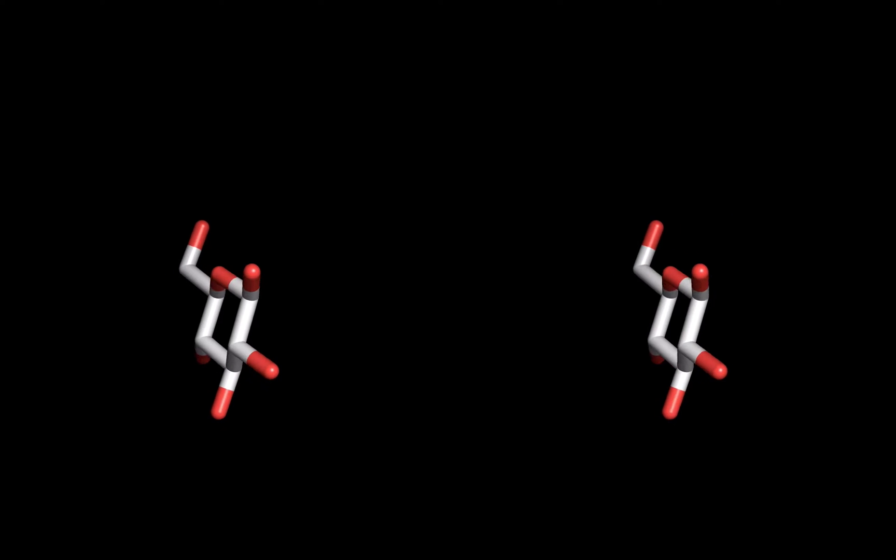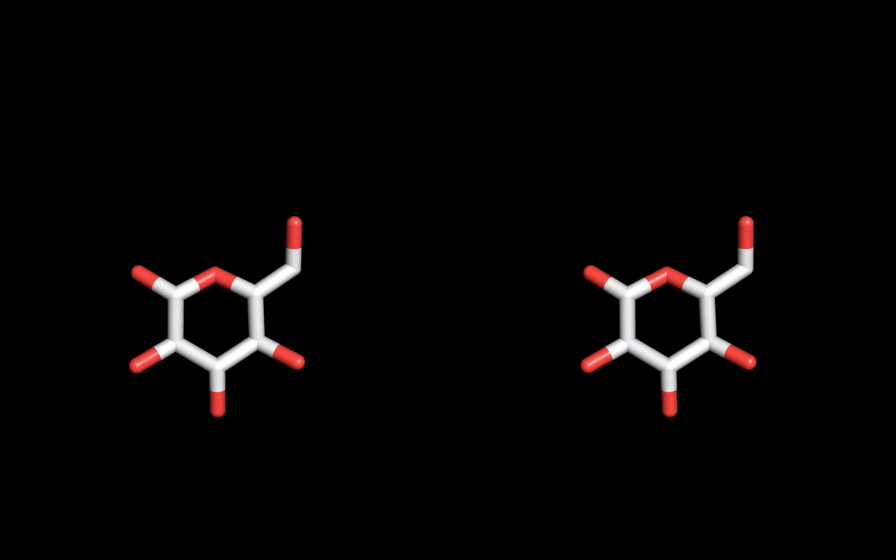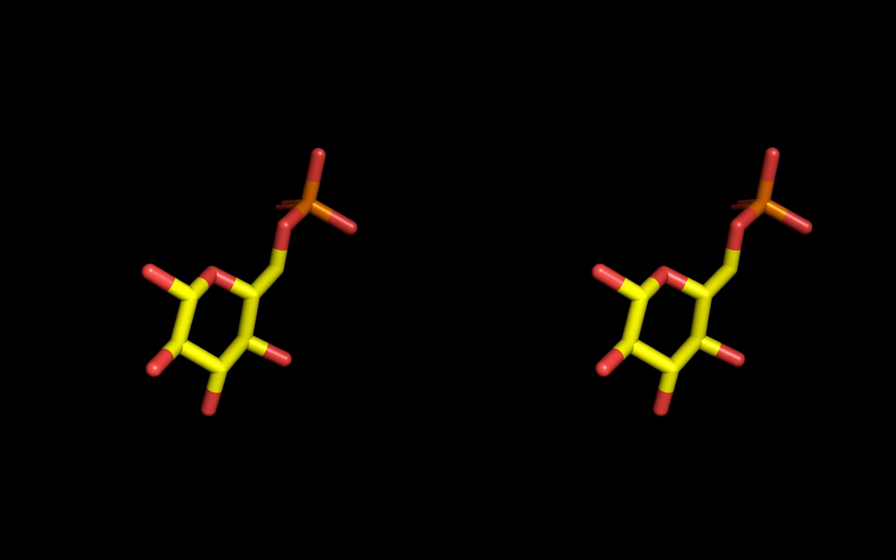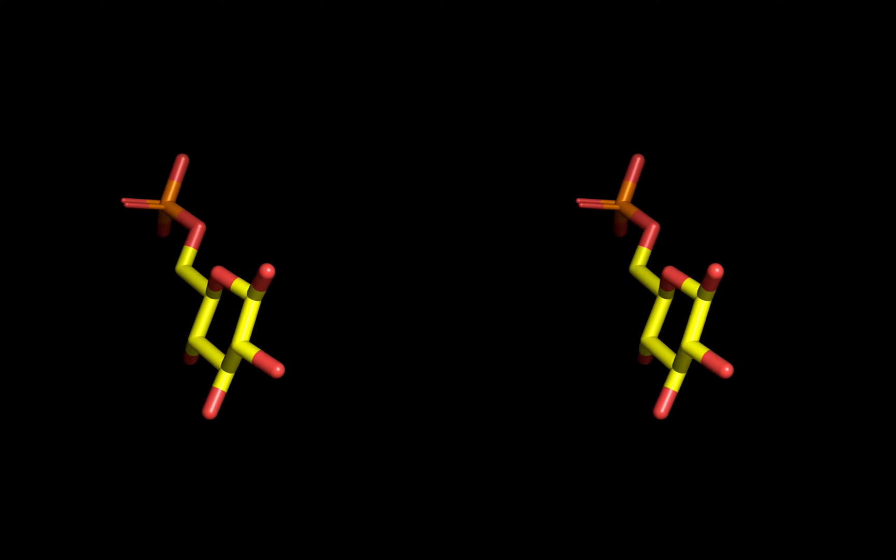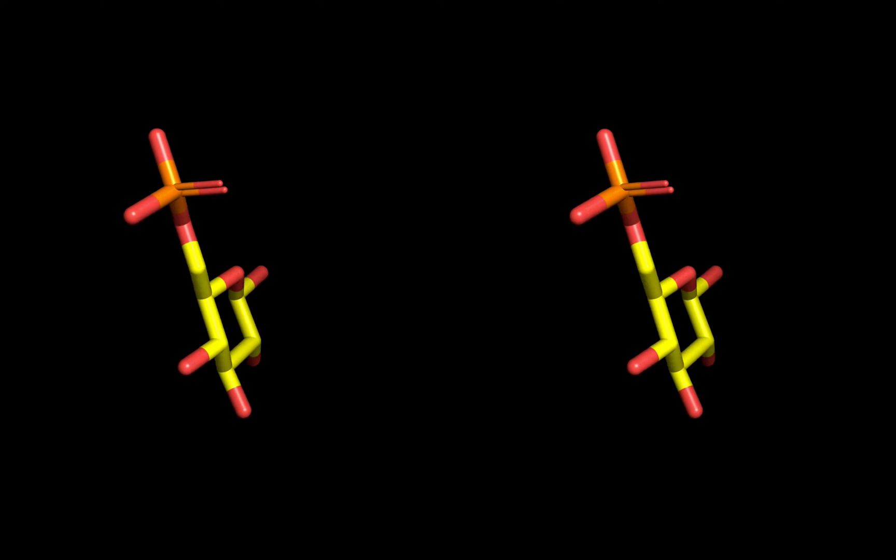Glucose is a neutral molecule and passes from the bloodstream into the cell easily. Once the phosphate is on there, the charge prevents it from leaving the cell, so it stays inside to provide energy for cellular processes.